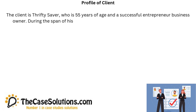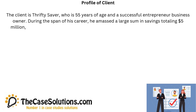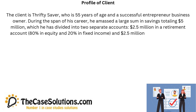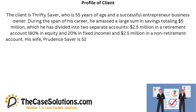During the span of his career, he amassed a large sum in savings totaling $5 million, which he has divided into two separate accounts: $2.5 million in a retirement account — 80% in equity and 20% in fixed income — and $2.5 million in a non-retirement account.